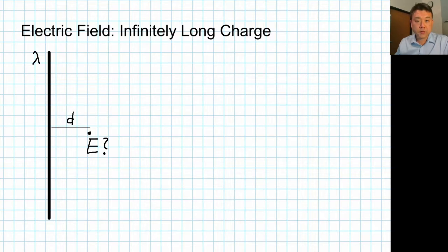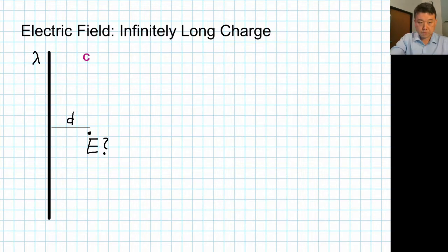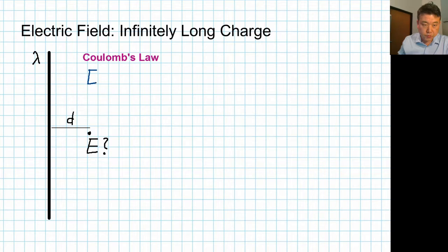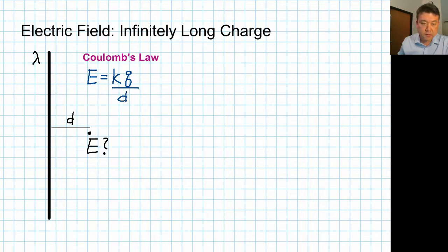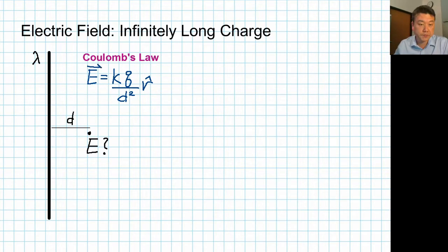Coulomb's law tells you the electric field due to a point charge distribution. Coulomb's law says the electric field due to a point charge is equal to k times the amount of charge divided by distance squared. Electric field is a vector quantity, so there's an r-hat indicating the direction away from the point charge. This describes the force divided by the charge of the test charge.